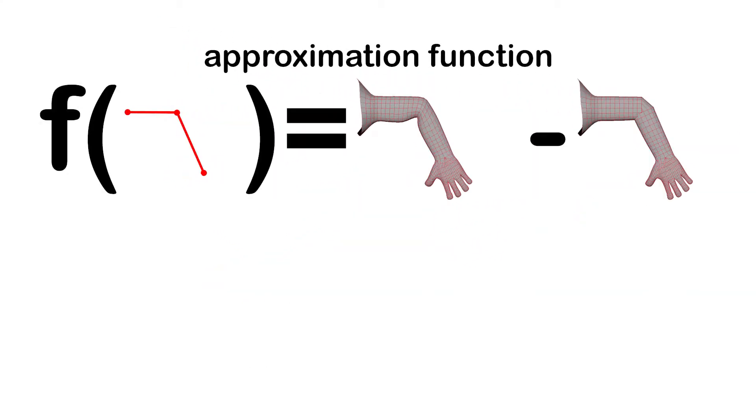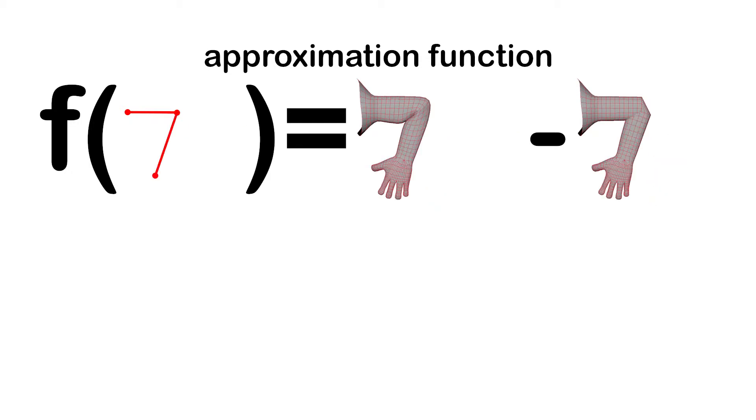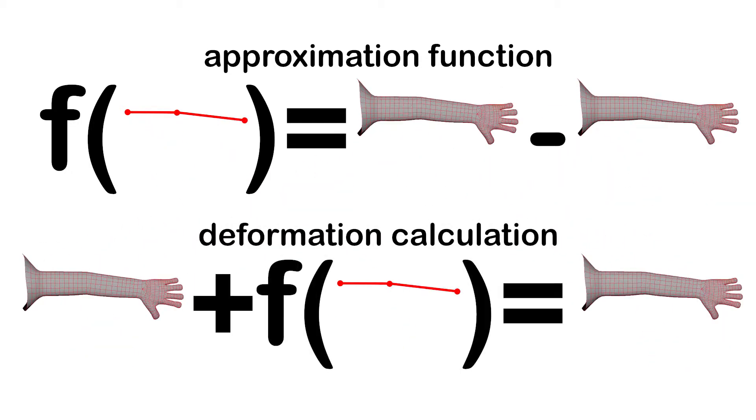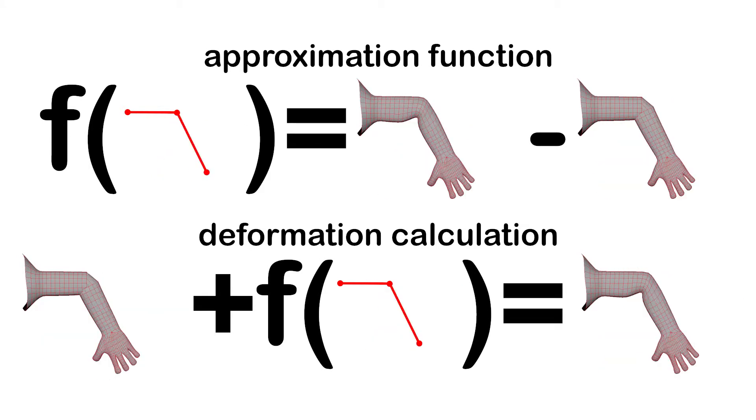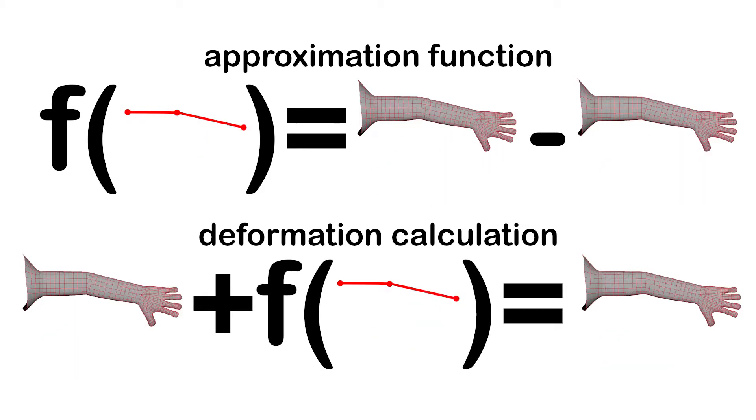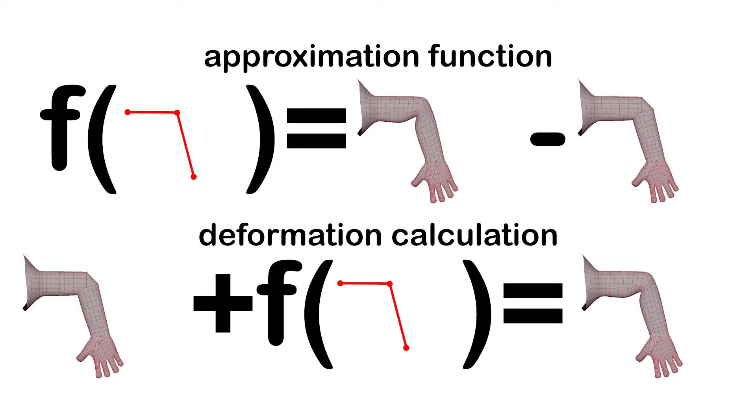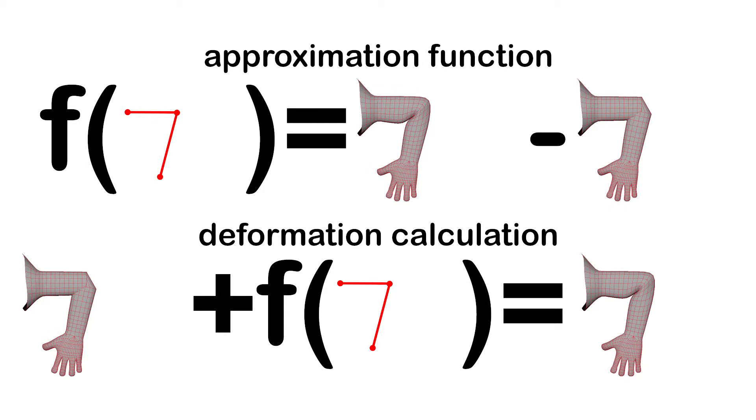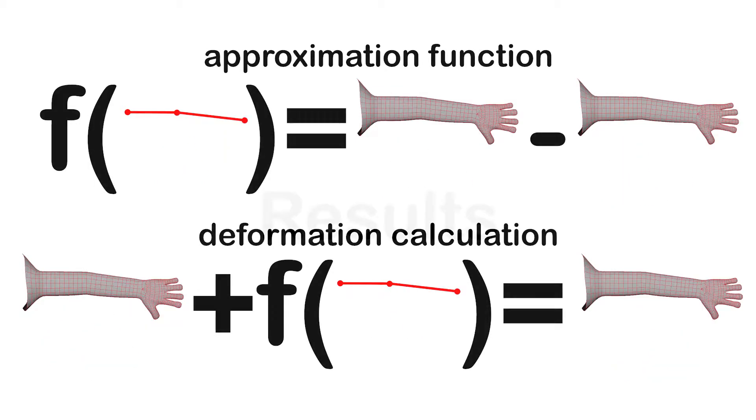The input to the algorithm is the transformations of each bone in the underlying skeleton of the character rig, and the output is the difference between the original deformation and the linear blend skinning approximation. The final deformation is approximated by adding the linear blend skinning deformation together with the output of our function approximator.